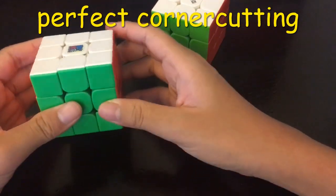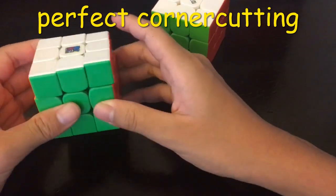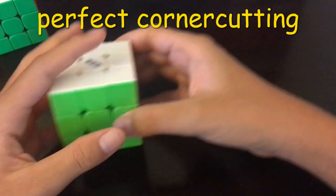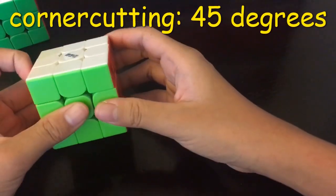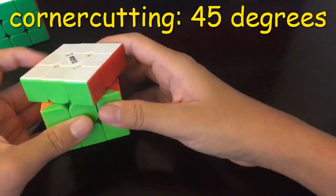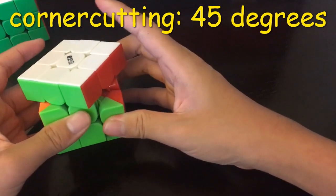For the GMS, I also loosened it a bit, and the corner cutting is 45 degrees I'd say. But more than 45 degrees it just gets stuck like that. So I guess that's acceptable, 45 degrees.